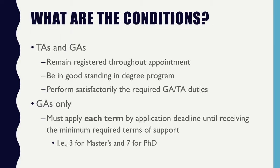To reiterate: if you are a GA or TA, you need to be registered as a student throughout the semester — this will break your contract if you do not remain registered. You must stay in good standing and perform your duties in a manner deemed satisfactory by the instructor. For GAs specifically, you must apply to work each term before the GA application deadline, until you have three full terms of support as a master's student or seven full terms as a PhD student.